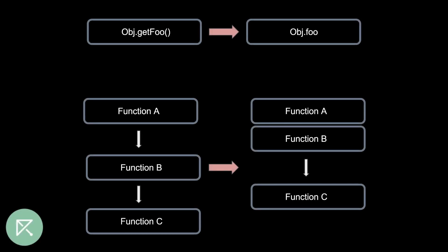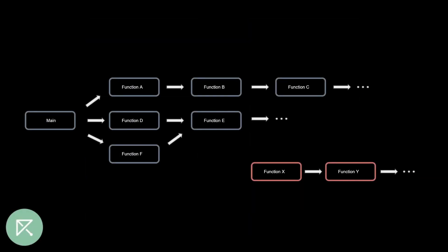Inlining can be done by moving the functionality of a called function into its caller function, to reduce the overhead of a function call without changing functionality, such as wrapper functions. Removing dead code while traversing the graph of function calls can be used to reduce binary size without any downside.